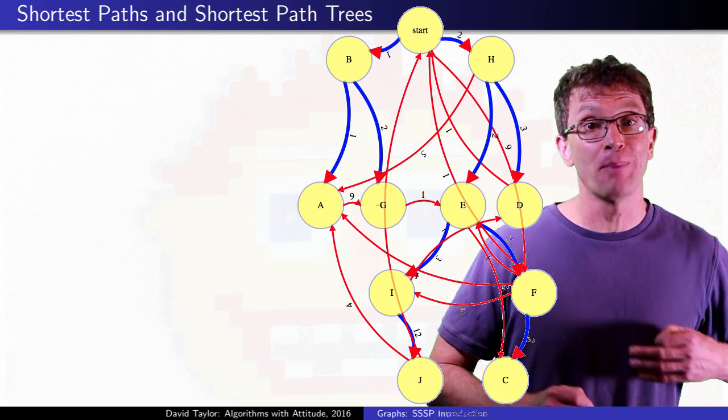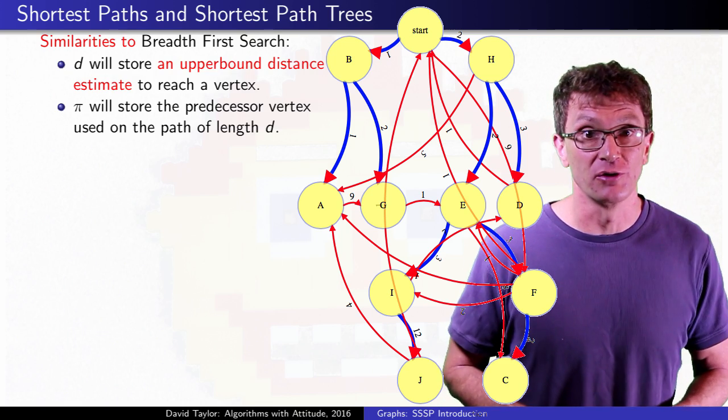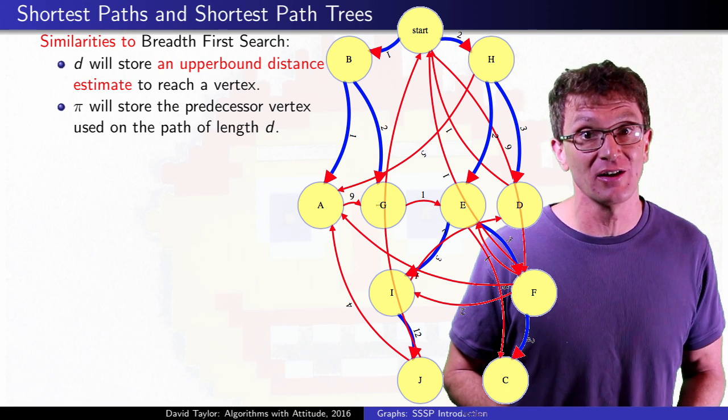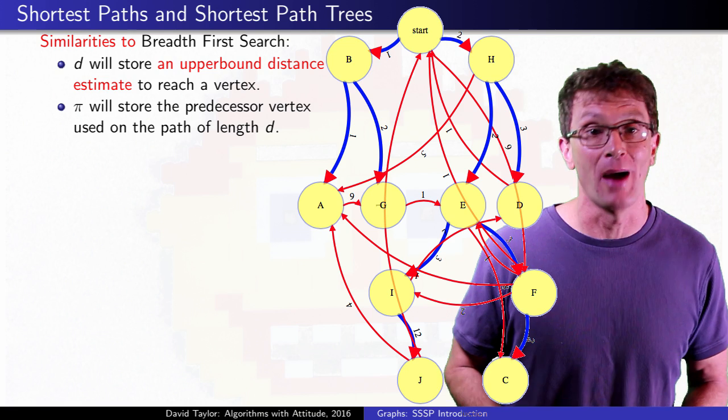This will give us a shortest path tree, similar to a breadth first search tree. Like in breadth first search, we store a distance and a predecessor node within each vertex, where the predecessor will be the parent node within the shortest path tree.